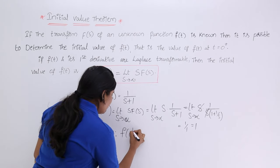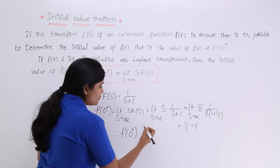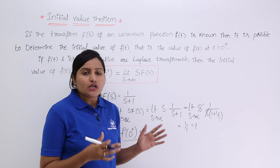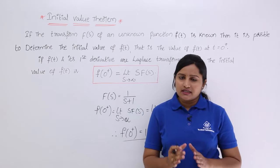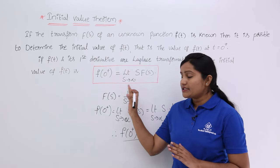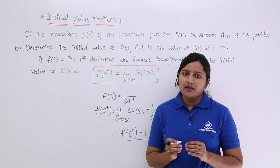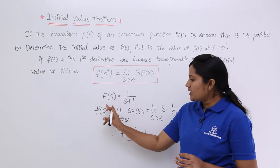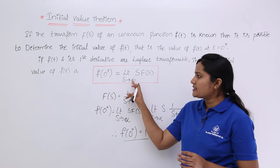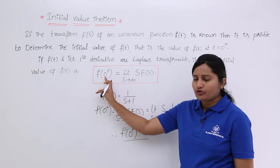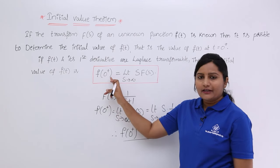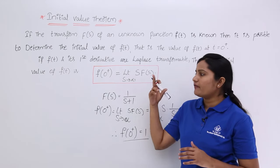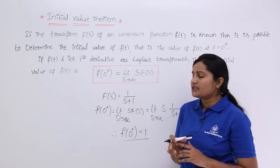Finally you get 1/1, which is equal to 1. So the initial value of the signal related to this spectrum is equal to 1 — meaning the signal starts at the value 1. Like this, you can trace the initial value of a signal when its spectrum is known. This is very important throughout signals and systems. For the initial value theorem, you use limit s tends to infinity. In the next class, you will cover the final value theorem, where you find f(infinity) using limit s tends to 0.